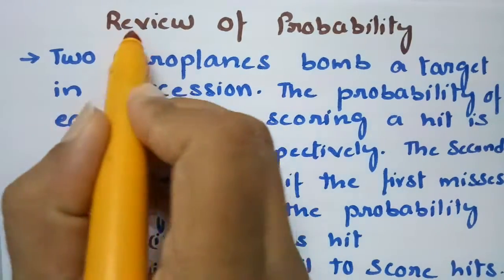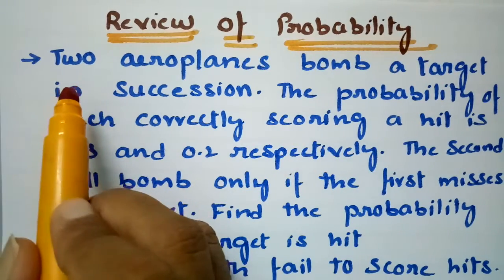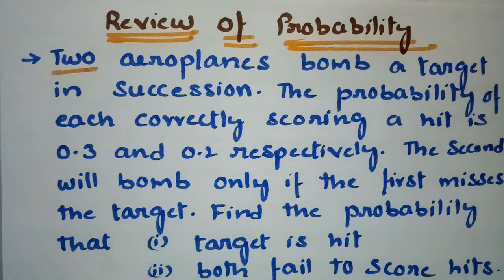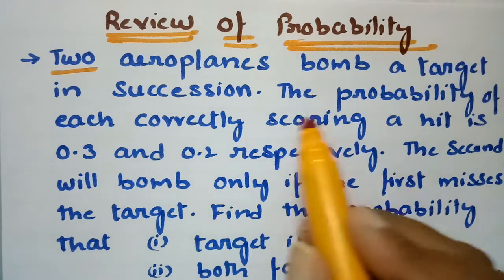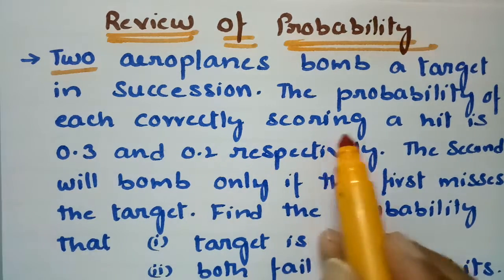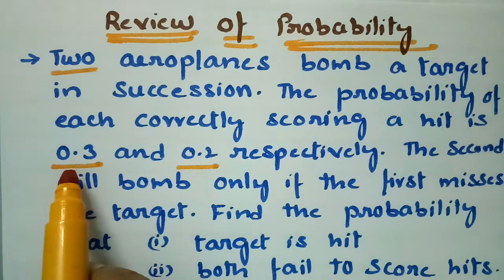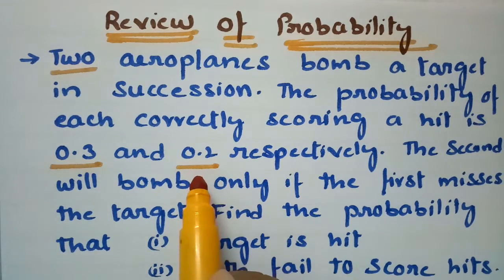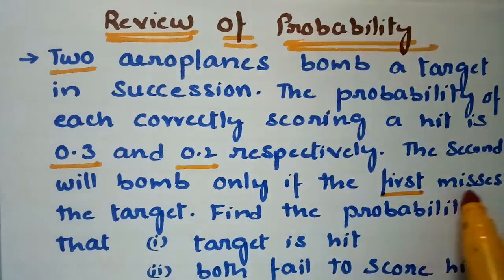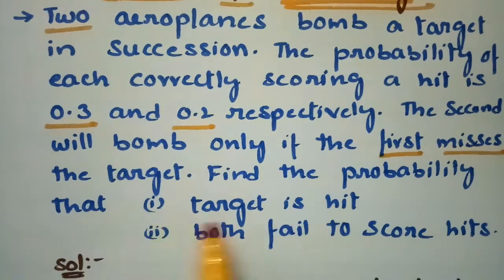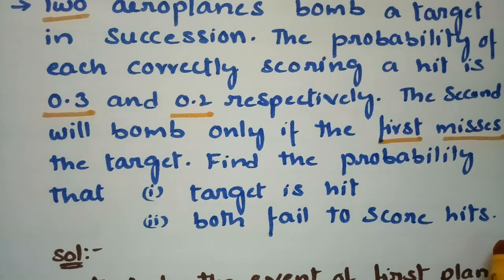This problem is from the review of probability and is one of the most important problems. Two aeroplanes bomb a target in succession one after the other. The probability of each correctly scoring a hit is 0.3 and 0.2 respectively. The second will bomb only if the first misses the target. Find the probability that: (1) the target is hit, and (2) both fail to score hits.